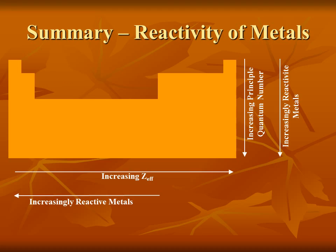Here's a summary in a slightly more visual format using the periodic table. Effective nuclear charge increases as you move to the right, which means attraction increases to the right, so metals get more active as you move to the left — less attraction means more reactive metals. Principal quantum number increases as you go down, giving you higher atomic radius, which gives less attraction, meaning more reactive metals as you go downward. These two trends converge somewhere around cesium, so closer to cesium means more reactive metal.